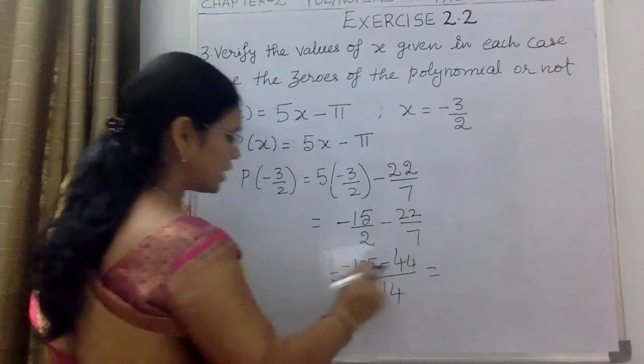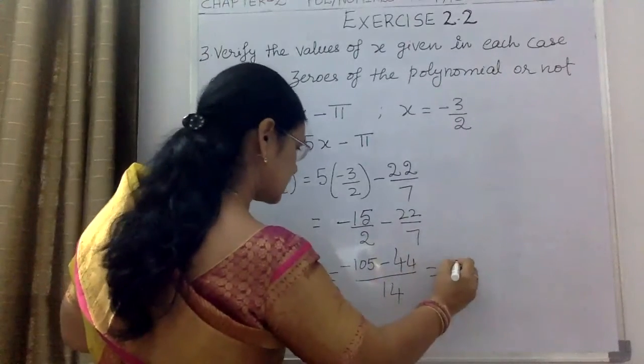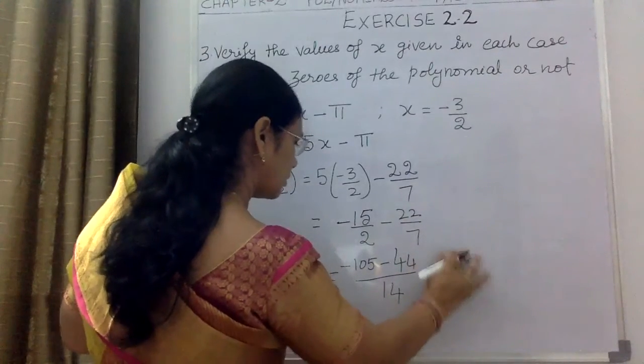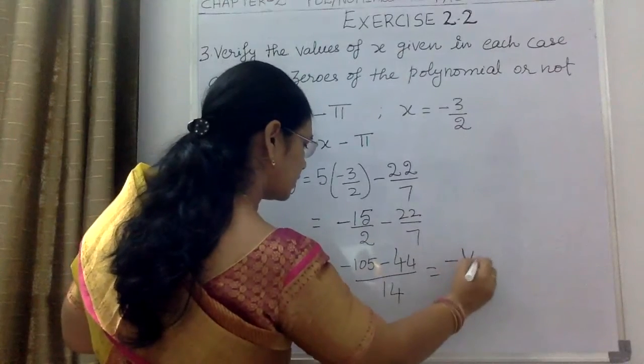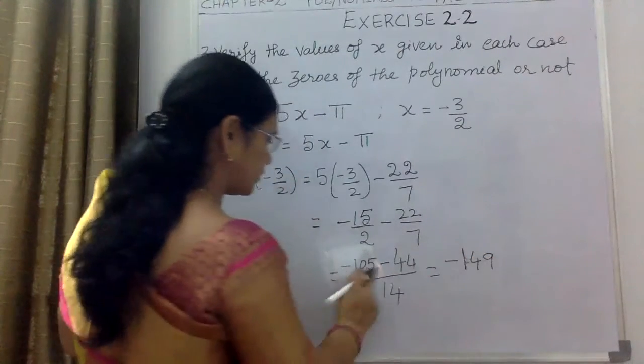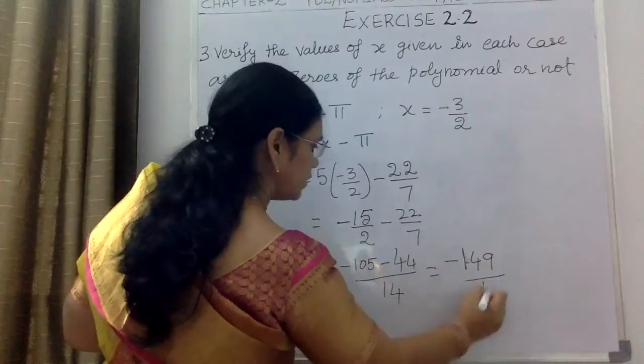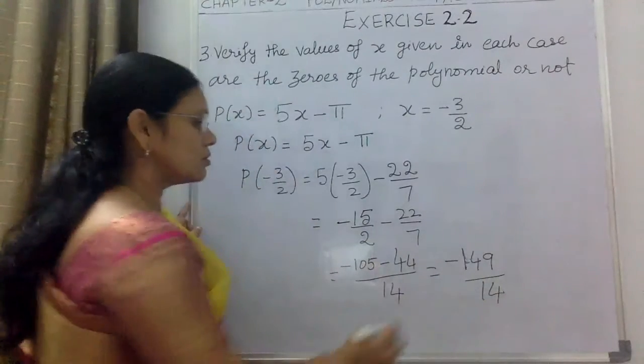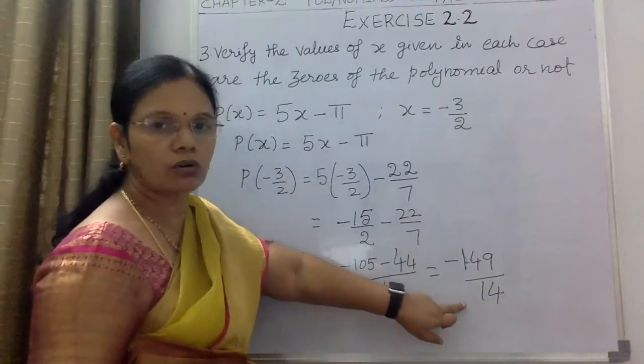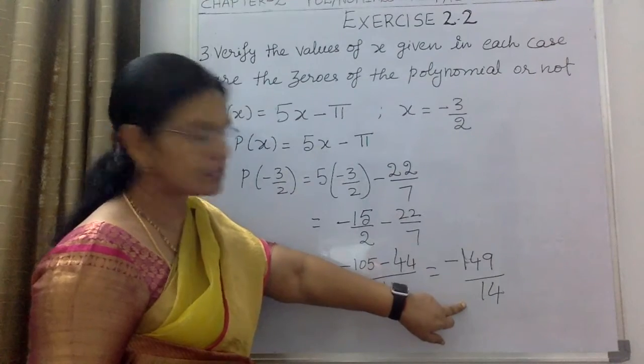So we get -105 - 44 = -149/14. Is this equal to 0?